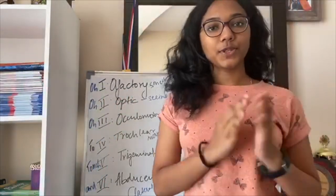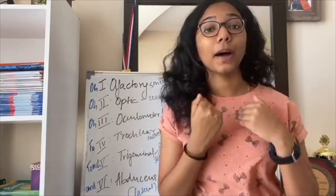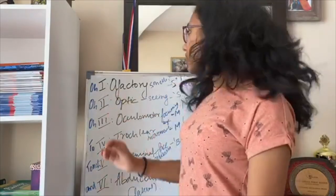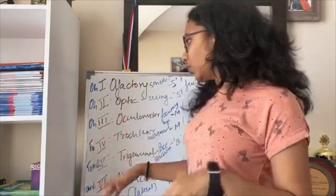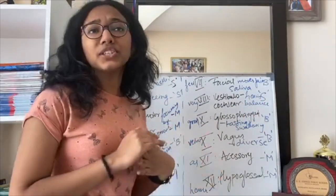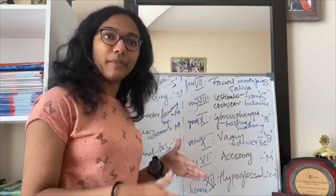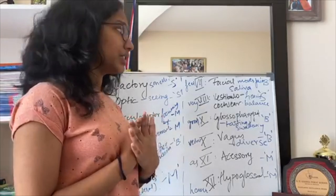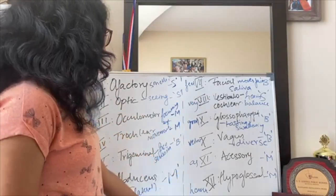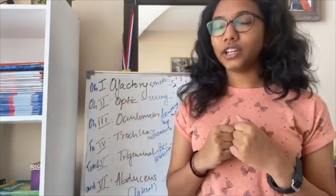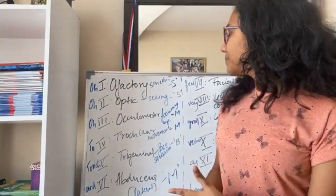Now, how do you remember all of this? Two mnemonics: the first is for remembering the names of the 12 cranial nerves — 'Oh, Oh, Oh, To Touch And Feel Very Good Velvet, As Heaven.' It makes no sense, but you'll remember it — each first letter corresponds to a cranial nerve in order.